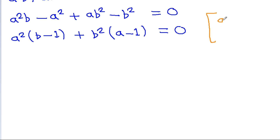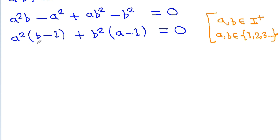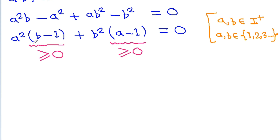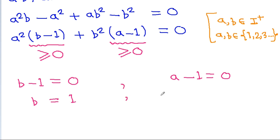Since a, b are positive integers, meaning a, b equal 1, 2, 3 and so on, a squared is always positive and b is greater than or equal to 1, so b minus 1 is greater than or equal to 0. Since the sum of these two non-negative terms equals 0, we get b minus 1 equals 0 and a minus 1 equals 0, meaning b equals 1 and a equals 1.